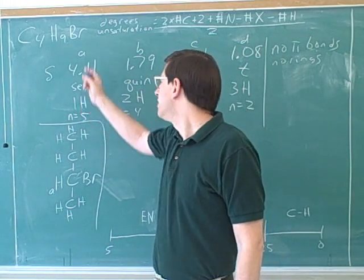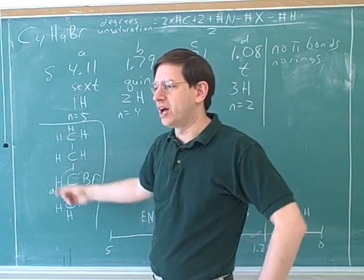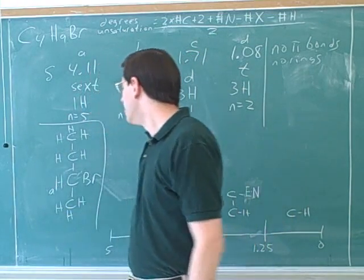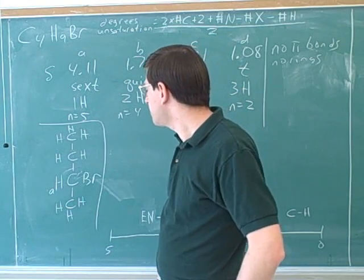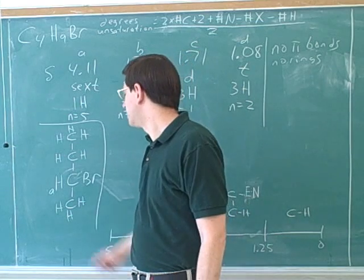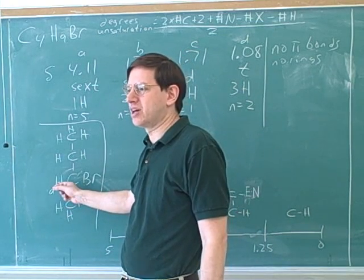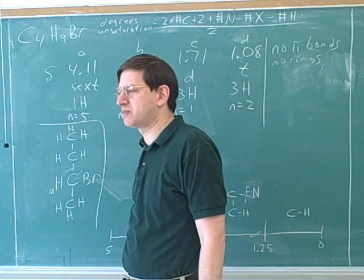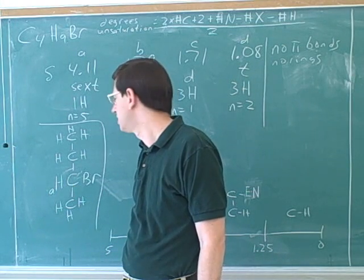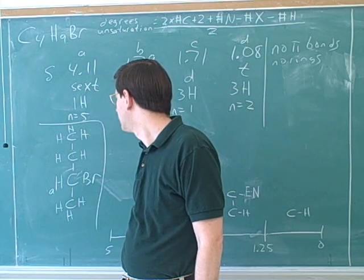After all, this is proton NMR. This is the absorption from this proton over here. So this is proton A over here. And we want to know how many protons are there that are on the carbons that are adjacent to the carbon that A is on. Those are the ones that can cause spin-spin splitting. Correct. Well, how many hydrogens are adjacent to this hydrogen? Five.